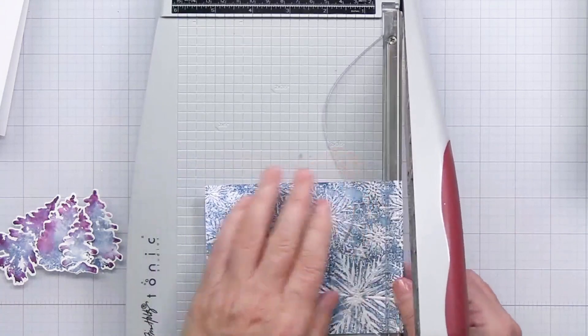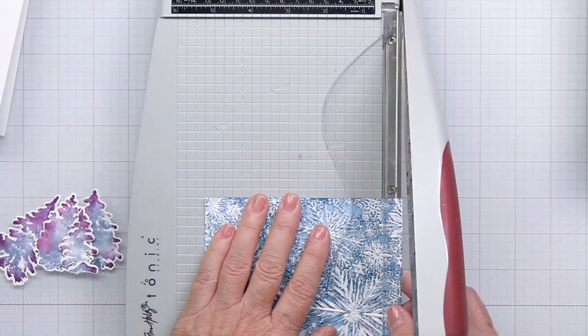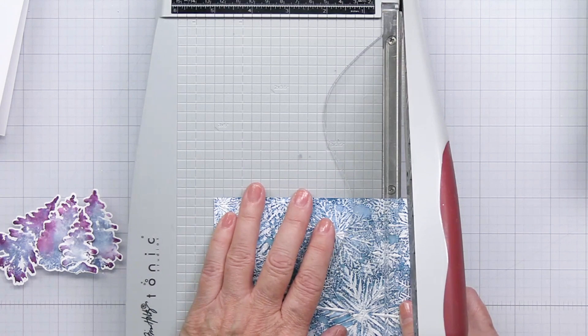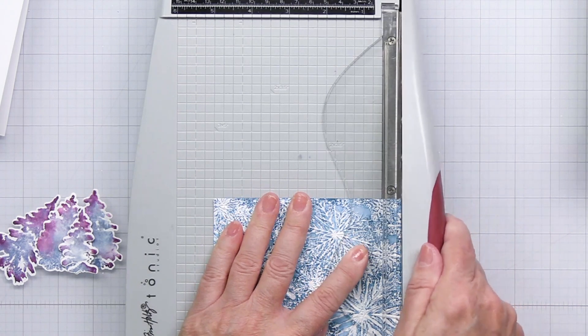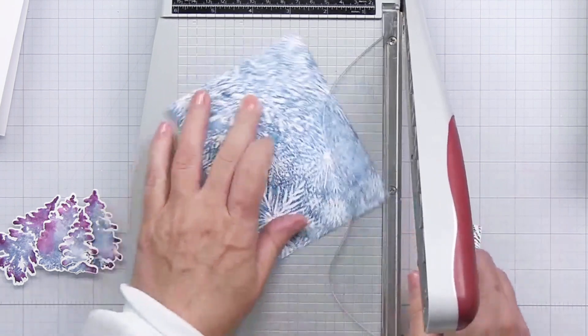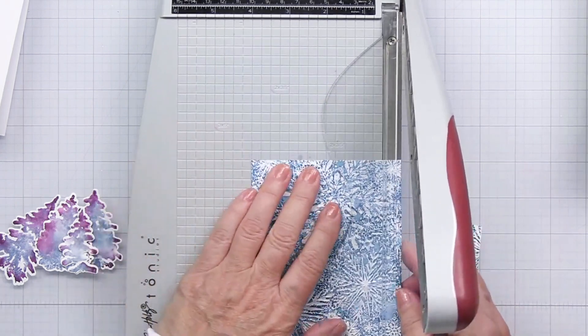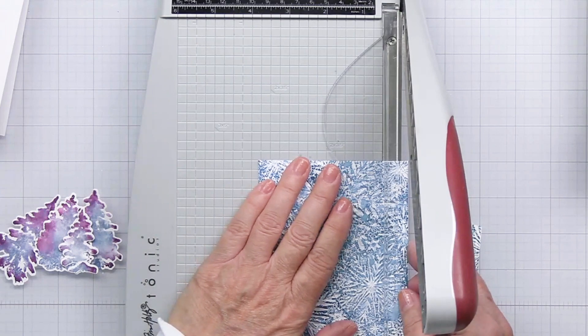So I'm going to size down this piece here. I'm sizing the paper down to three and three quarters by five inches, and this is going to allow me to mat this paper with some pattern paper from the Winter Wonderland paper pad.